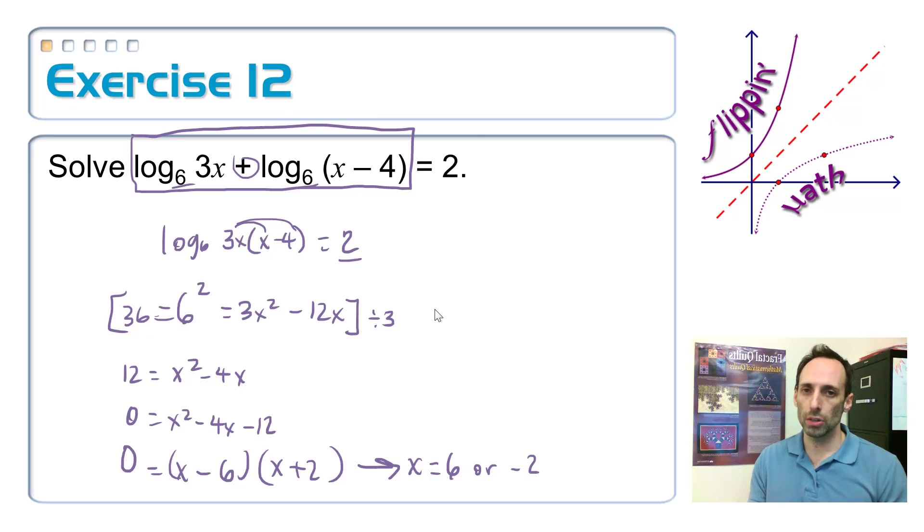Remember, we've got to check for extraneous. We have to make sure what's inside the parentheses, whatever we're taking a log of, always stays positive. So, let's look at the x equals 6 part. 3 times 6, 18, that's good.